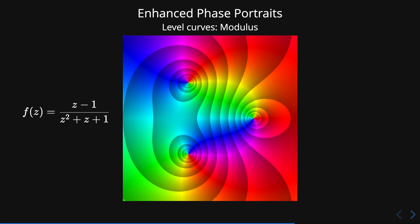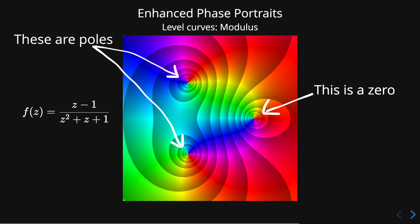Using the enhanced phase portrait, we can see that the point on the right is a zero and the other two points on the left are poles.